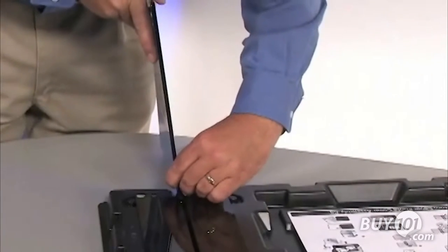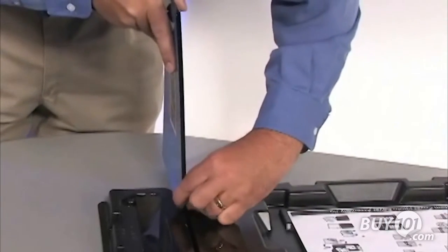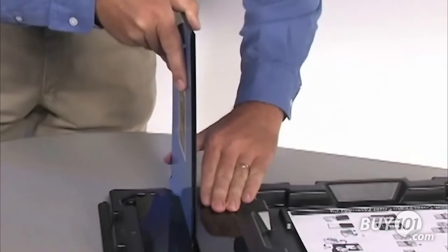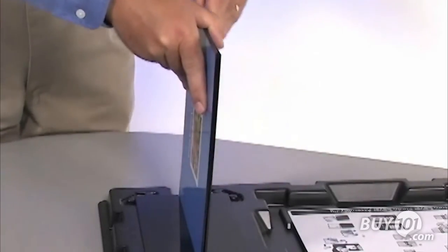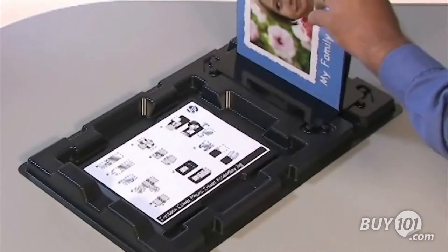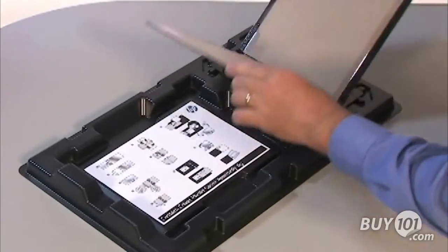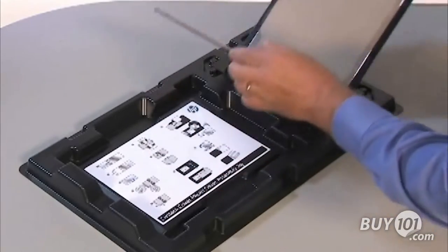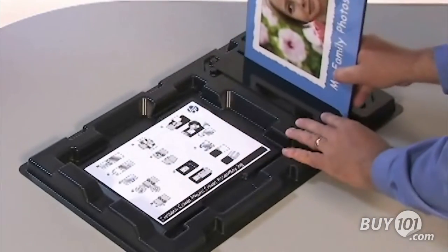Slide the spine into the creasing slot of the assembly jig. Do not let the top edges of the cover slip out of alignment as you insert the cover. Open and close the cover three times to set the spine crease. Remove the cover from the slot.